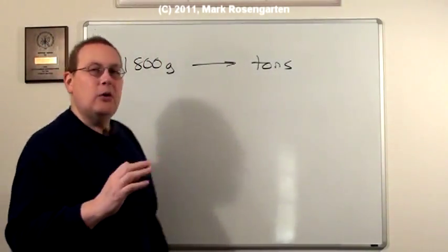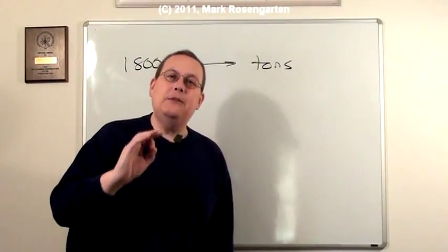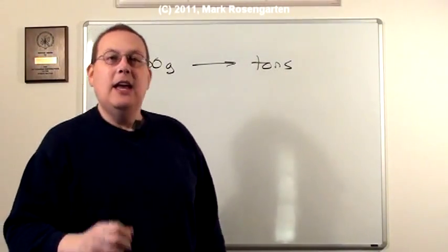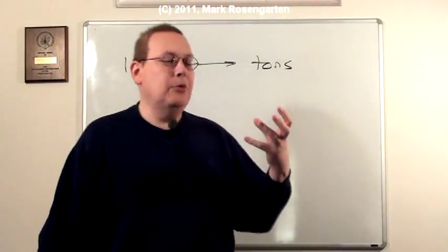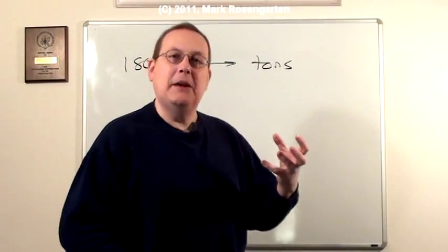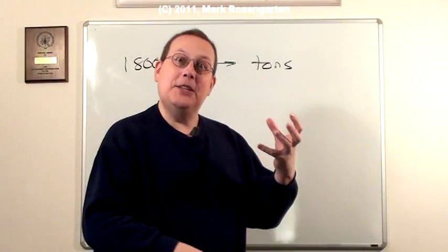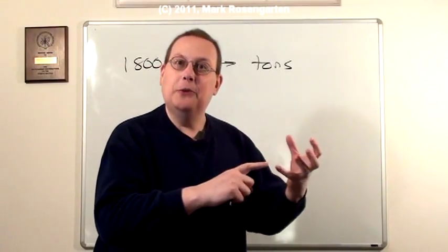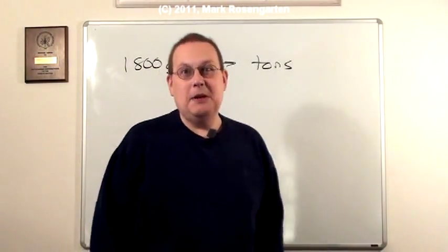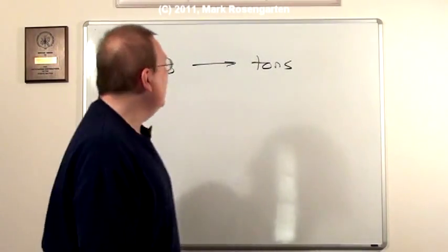First of all, I happen to know that there are 454 grams in a pound. And I know this because I go to the store and I buy a thing of peanut butter, and it says one pound of peanut butter. And then underneath it, in parentheses, it says 454 grams. Because we all went to the metric system back in the 70s.